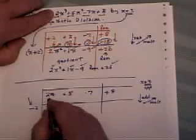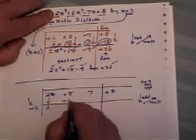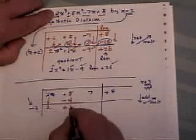2 plus 0 is 2 so you virtually bring the 2 down. Negative 2 times negative 2 is negative 4. 5 plus negative 4 is plus 1.